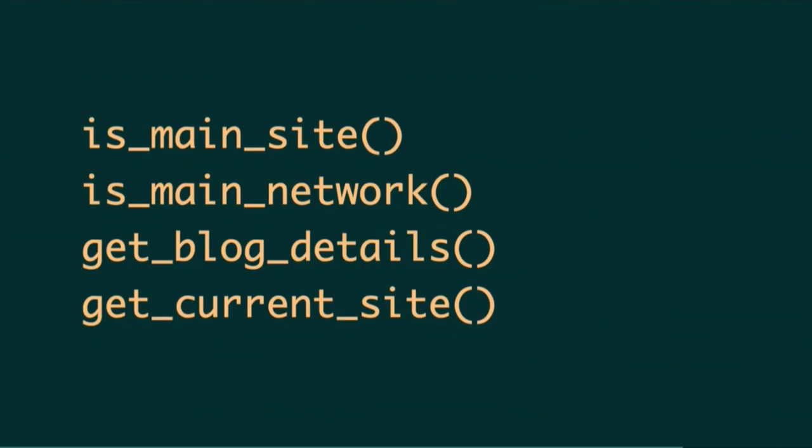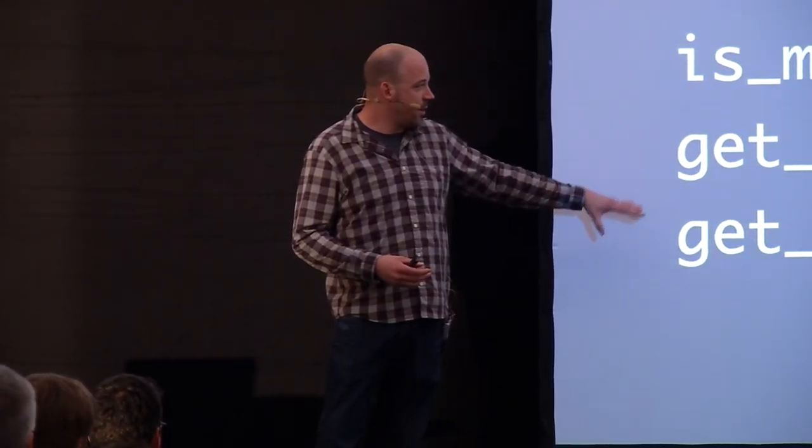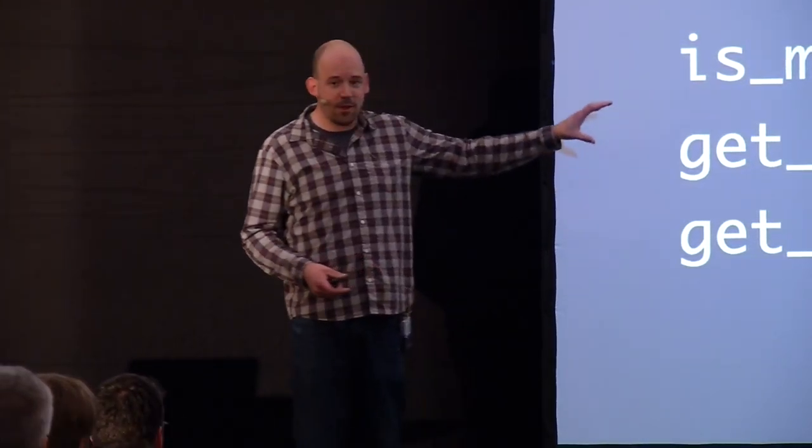Some other good functions for context to help you figure out where you are in your code: is_main_site, is_main_network, get_blog_details, and get_current_sites. Hopefully once 4.6 ships in a couple of months, we'll have a get_site and a get_network that will make the naming a little bit easier to figure out.